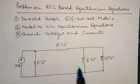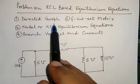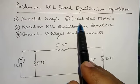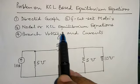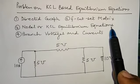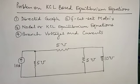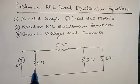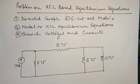This is the circuit diagram and for this circuit diagram, first we have to draw the directed graph, then second the F-cut-set matrix, then the third part which we have to calculate is nodal or KCL equilibrium equations, then branch voltages and branch currents. The first part is the directed graph.